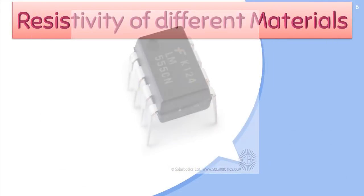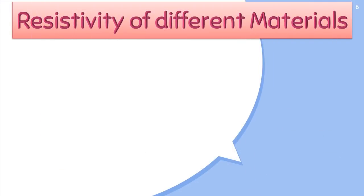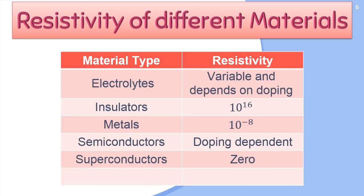Materials are categorized according to their level of resistivity. This table lists their resistivity values. Electrolytes and semiconductors behave like an insulator without doping. The resistivity of these materials varies with the level of doping and acquires a wide range of resistivity levels.